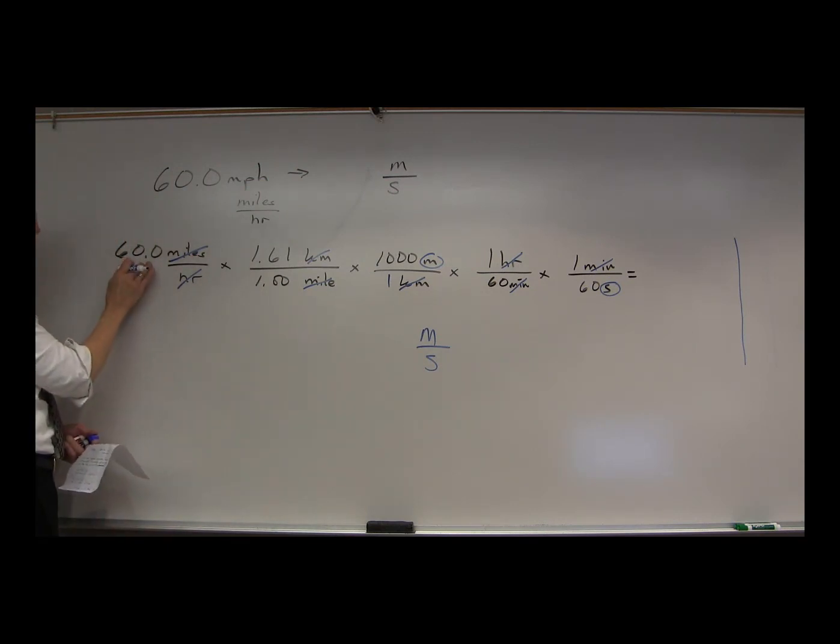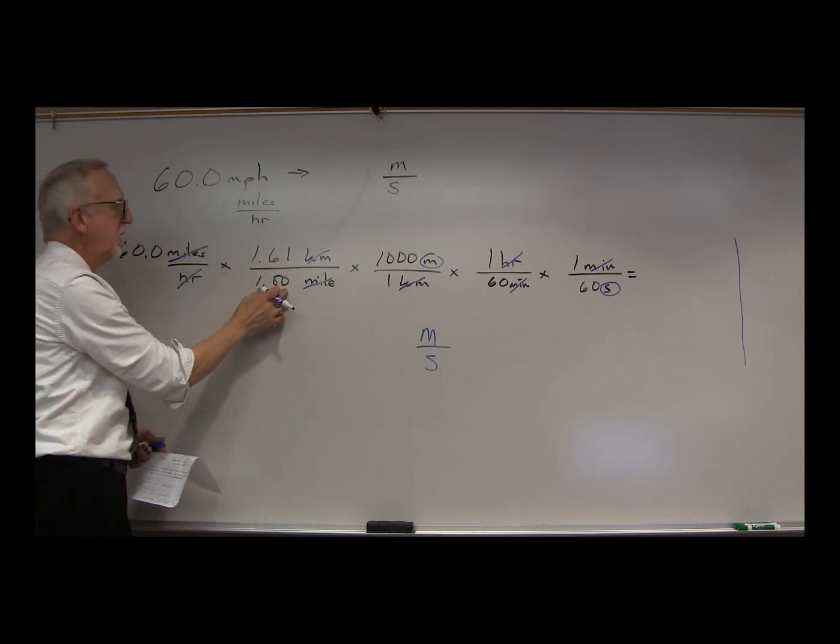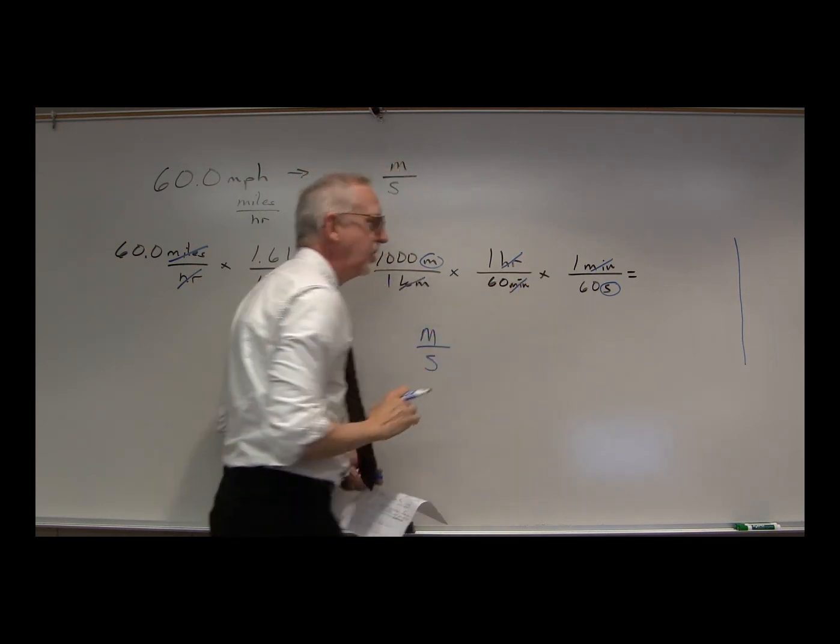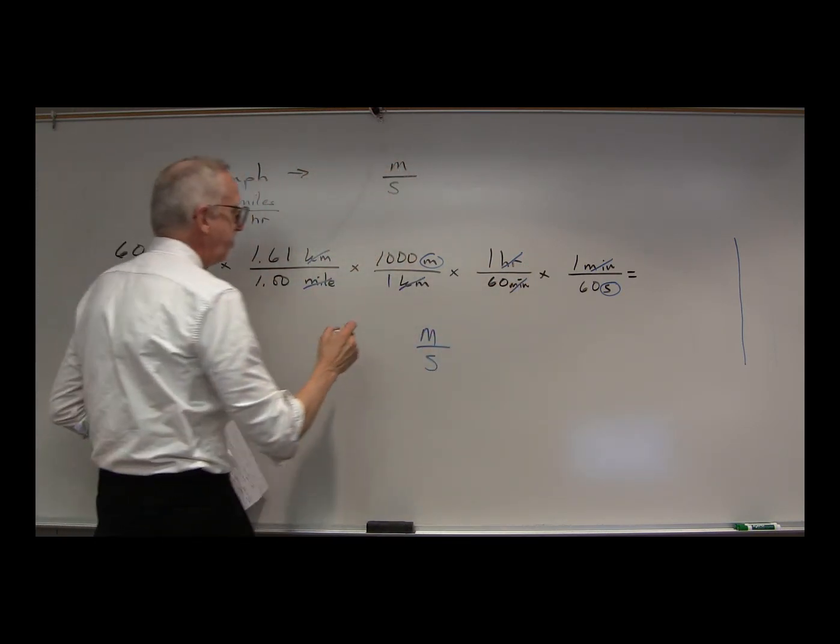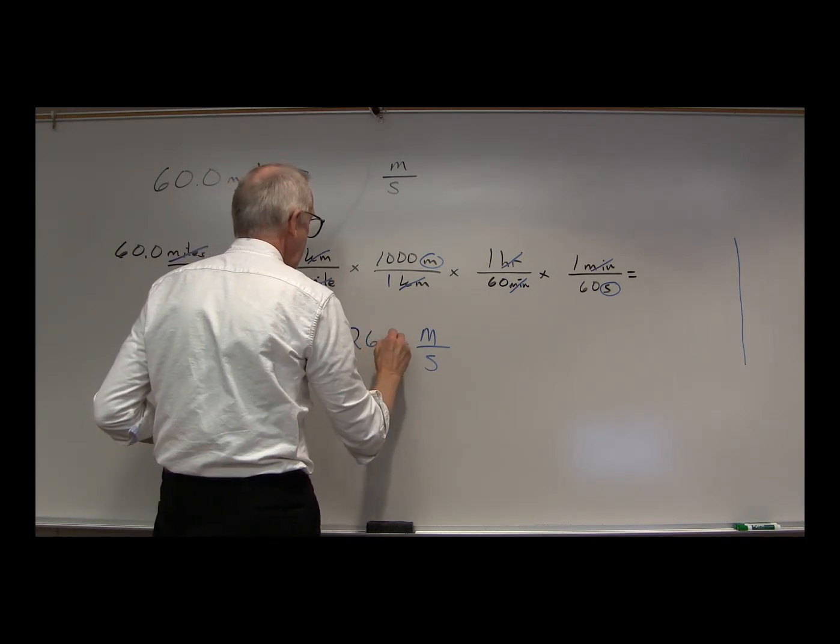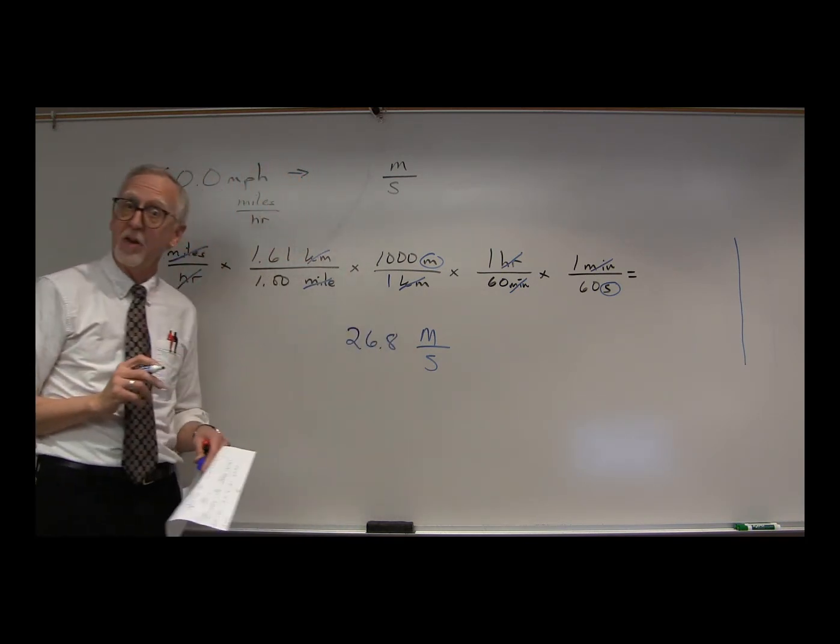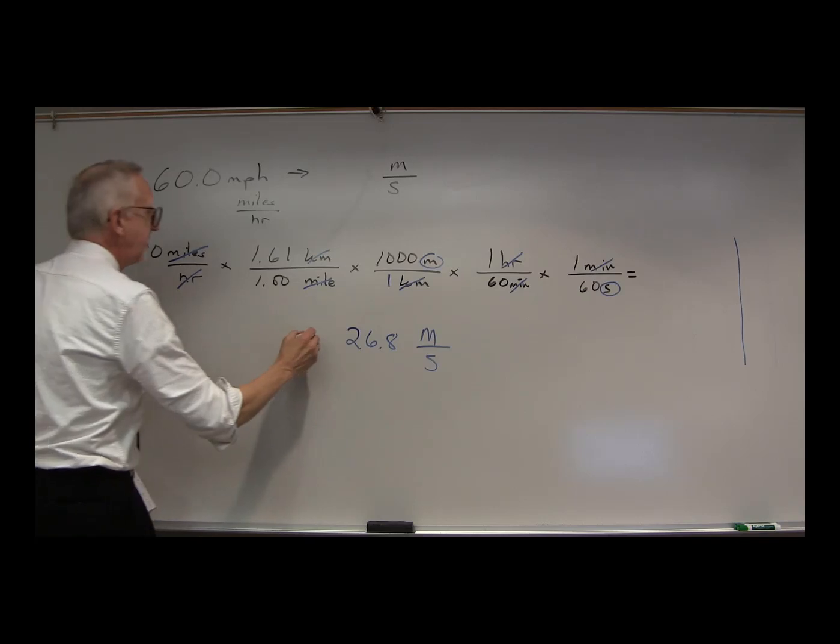How many sig figs? We've got three, three, definition, definition, definition. We can keep three sig figs. Multiply this all out. What do we get? 26.8 meters per second. That is 60 miles per hour.